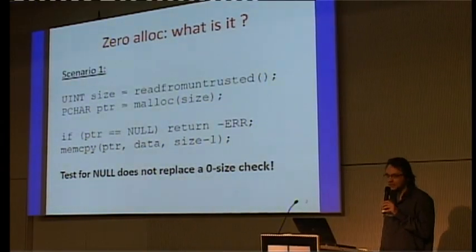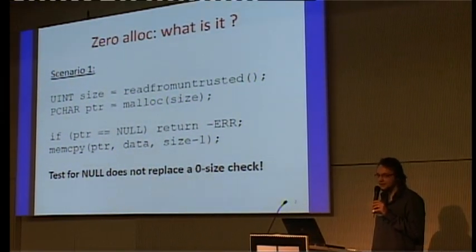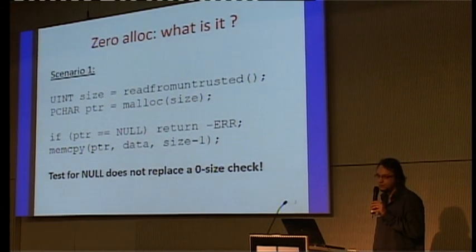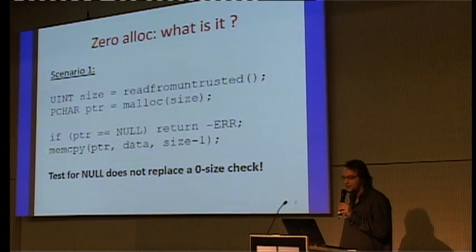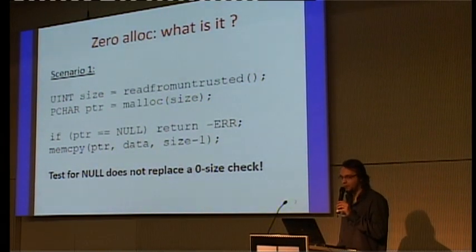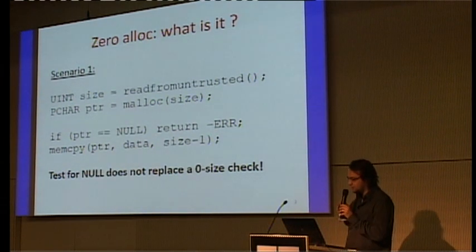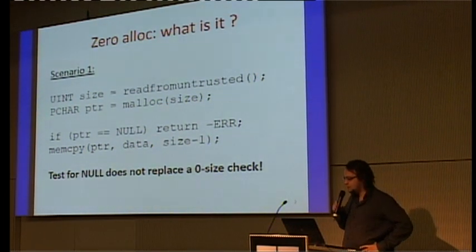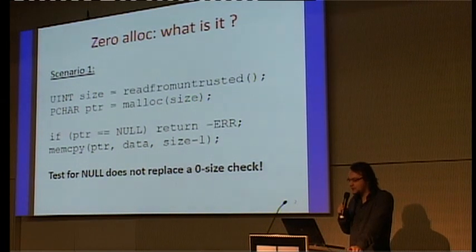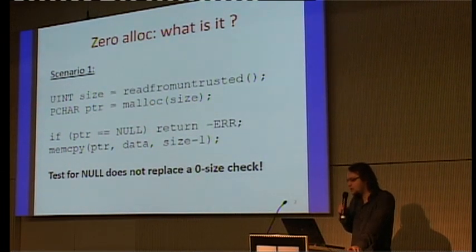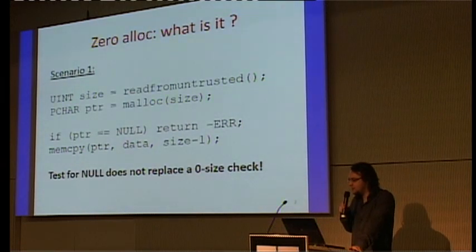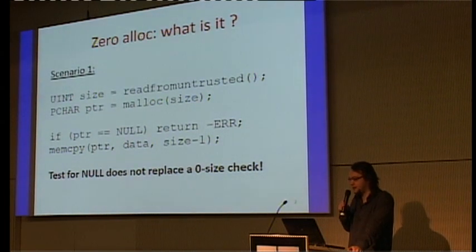Most of the time when you do a zero-size heap allocation, malloc and many other functions that allocate memory dynamically return a valid pointer pointing to a valid heap chunk. For example, if you allocate zero bytes, the pointer is not null, so the null check is not sufficient. If you have a side condition like an integer underflow — say size minus one — then you have a buffer overflow, and checking the pointer for null is not going to save you.